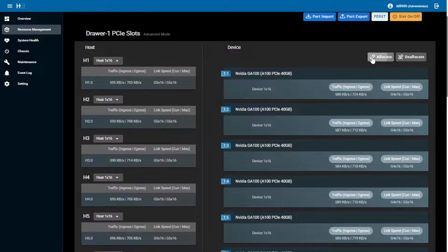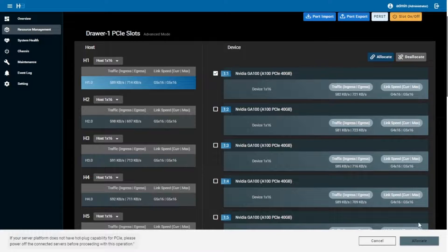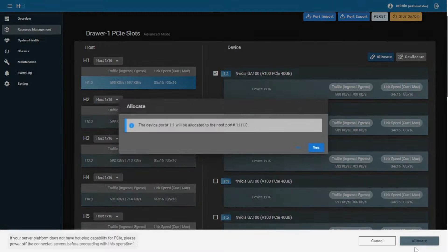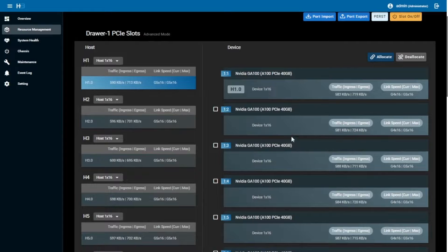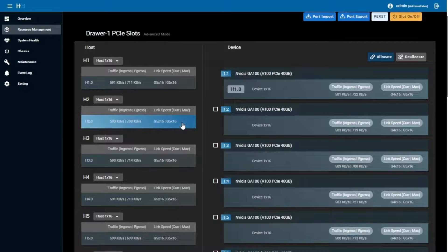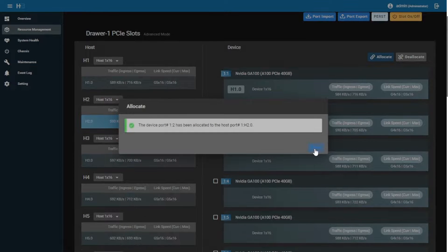Now I want to allocate and I hit this tab at the middle right side. Now I select the host one and then check the device number one. Then hit the tab allocate, success. Then we do the host two, doing it with the same process.